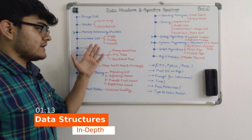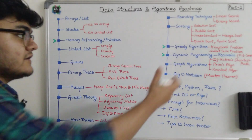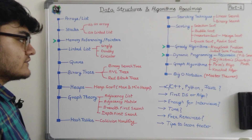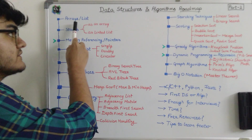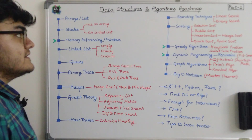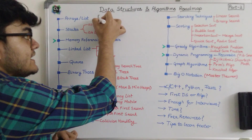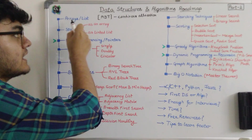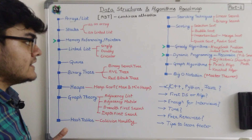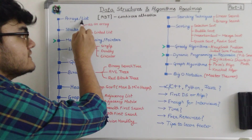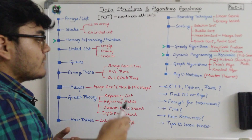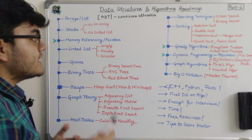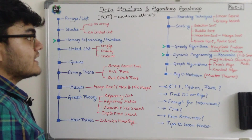Let's start with the data structures. The first data structure is arrays, or lists — these are also known as ADTs, or abstract data types. First you need to understand what exactly an array is. In Python we have lists, and I've included lists here because there are some data structures, for example stacks, which we can implement using an array.